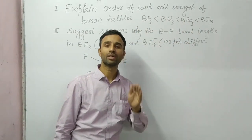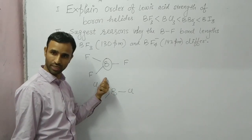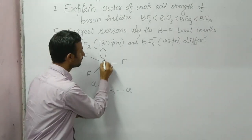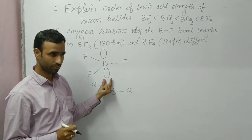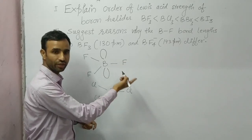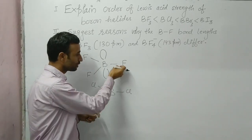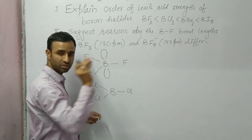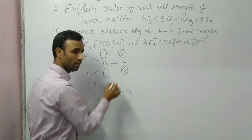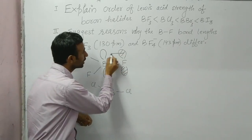That means the electronegativity concept failed to explain this order, so there is something else we are going to discuss. In BF3, boron has a vacant p-orbital. Fluorine has 3 lone pairs — fluorine has 7 electrons in its valence shell, one is involved in sharing, so 6 electrons are left unshared. This is the filled p-orbital of fluorine. Fluorine, being small in size and electron-rich, back-donates its electrons to boron.